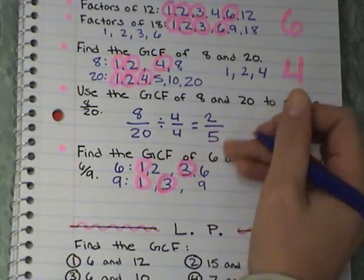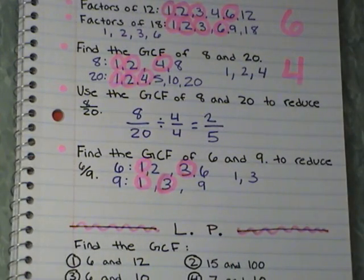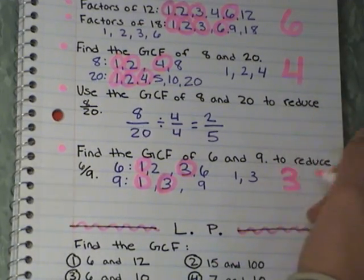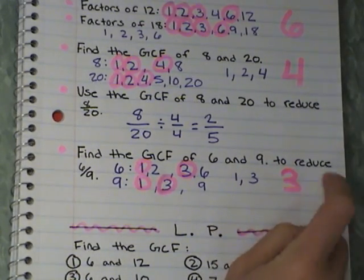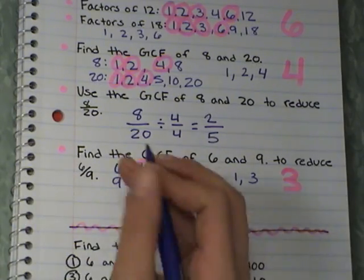So I have 1 and 3. So the GCF, or the greatest common factor between 6 and 9, is 3.